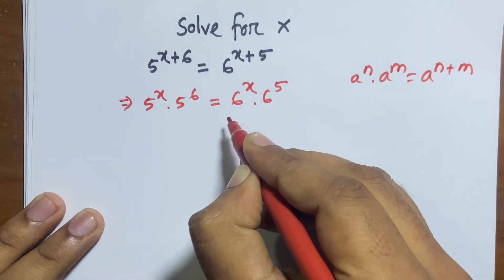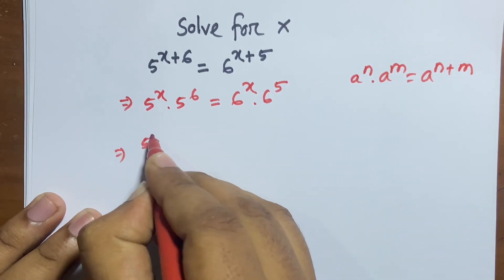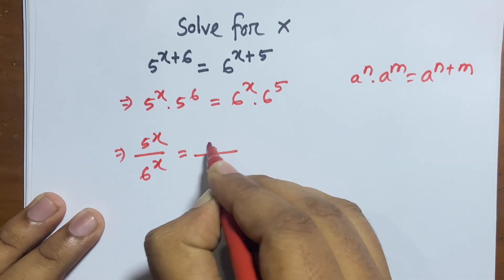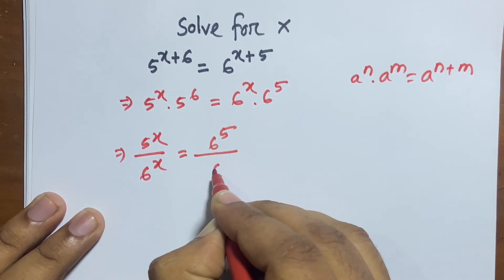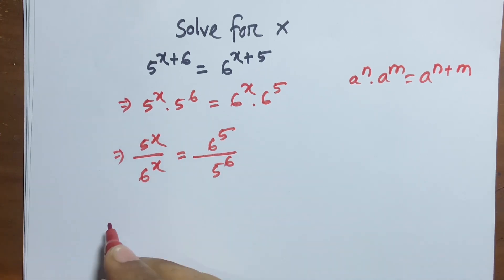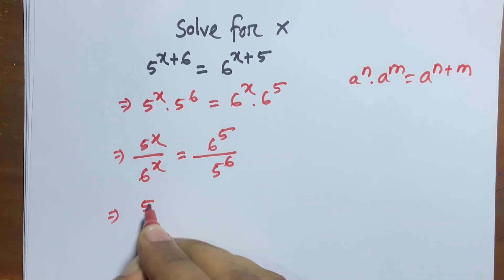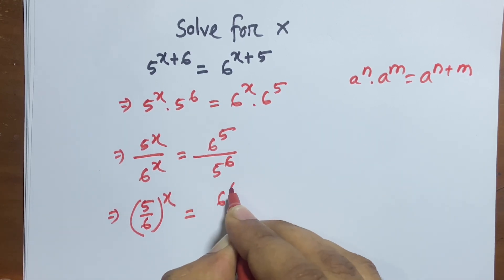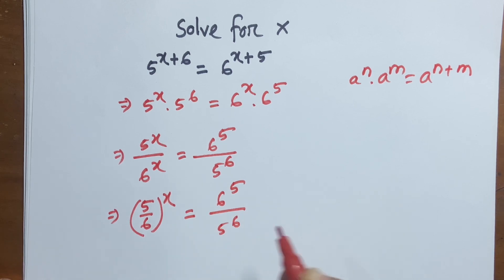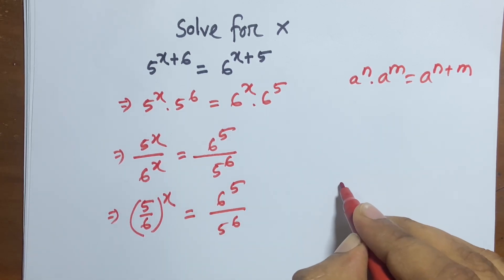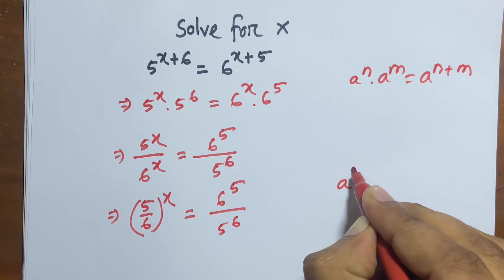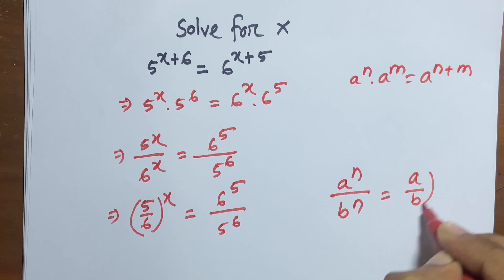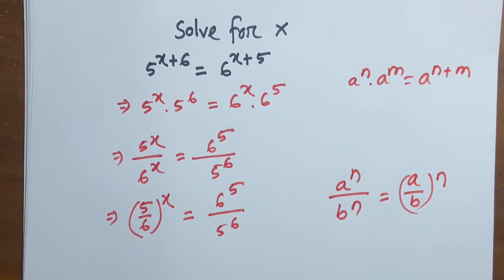Now I can see easily: 5^x / 6^x = 6^5 / 5^6. So (5/6)^x = 6^5 / 5^6. We know that a^n / b^n = (a/b)^n. I follow this formula in this line.